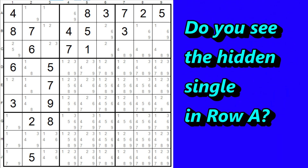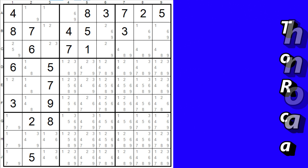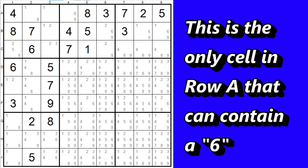Right next to it is a hidden single — the six. It's hiding behind the nine, but it's the only place a six can go in row A. The six can't go here because there is already a six in block one. So since row A needs a six and it can't be in these two cells since they are in block one, then it must go here. The nine could also go there, but it must be a six since row A needs a six and this is the only cell in row A that can contain a six. This six is hiding behind the nine, so it's called a hidden single.